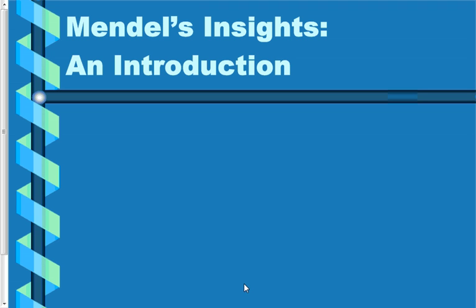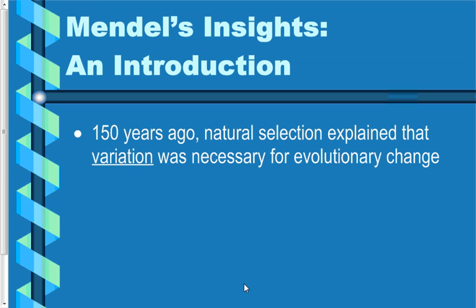The basic idea behind all this is kind of a history lesson. We're going to back up to the mid-1800s, about 150 years ago, when Darwin had proposed his ideas for natural selection. One of the keys to natural selection is the fact that in a species there has to be variation. If there's no variation, there's no ability for a species to change through evolution.